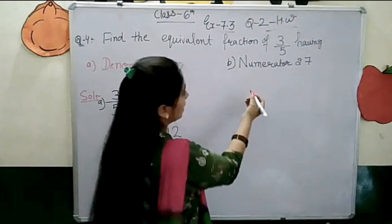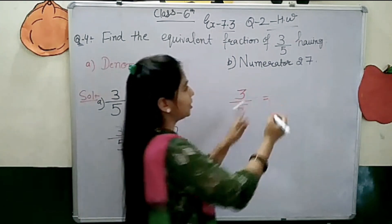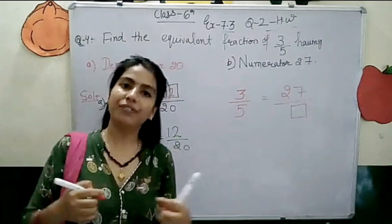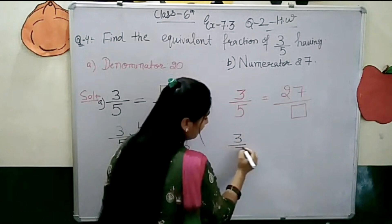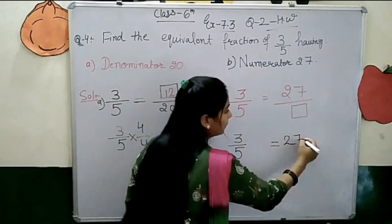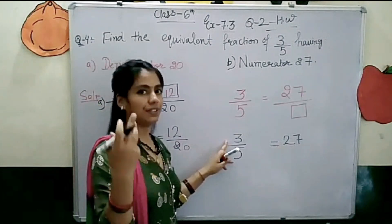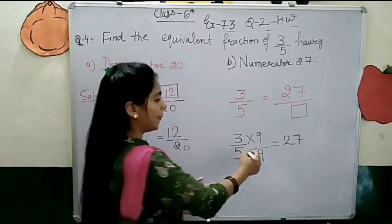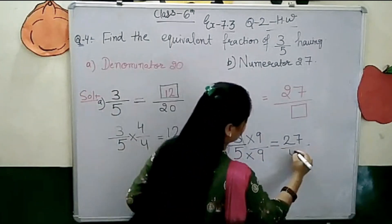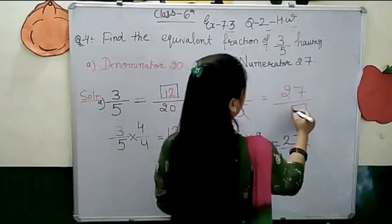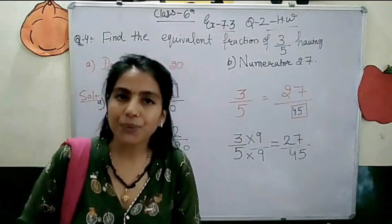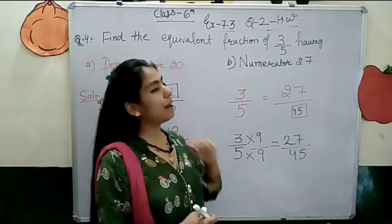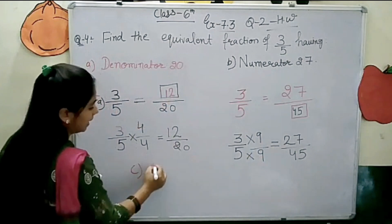Now the next part: 3 by 5, but here the condition is numerator is 27. We write 3 by 5 equals 27 by box. From 3 to 27, we multiply by 9 — 3 nines are 27. So the denominator also multiplies by 9: 5 nines are 45. In the place of the box, the answer is 45. Parts C and D will be homework. You are now understanding equivalent fractions step by step — multiply and divide by the same number for both numerator and denominator.